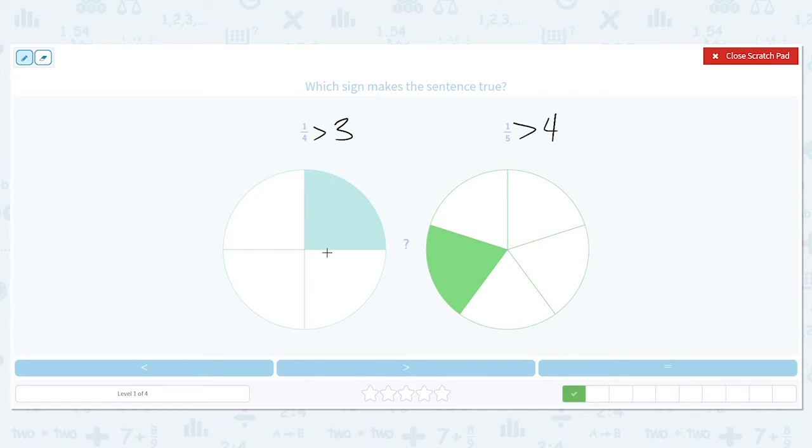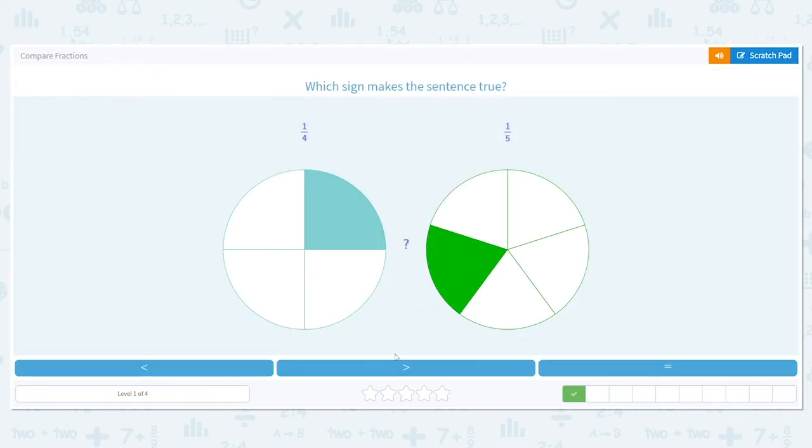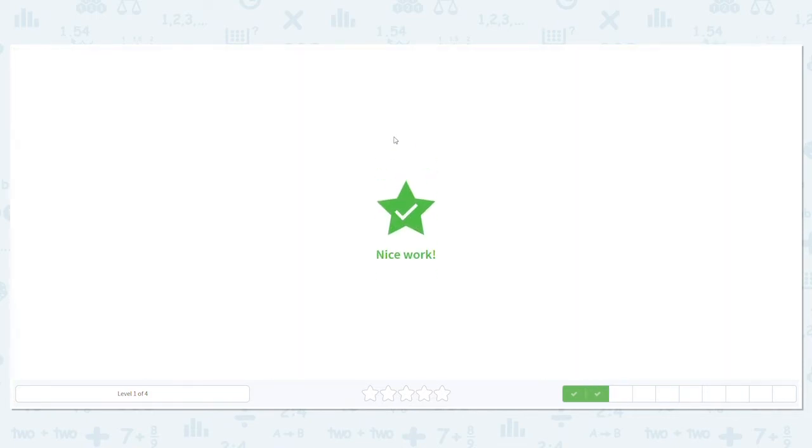So that means this fraction here, one-fourth, is greater than one-fifth. The thing with fractions is the higher the denominator, the smaller the piece. So one-fourth is greater than one-fifth.